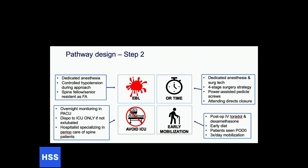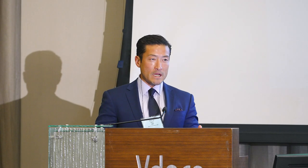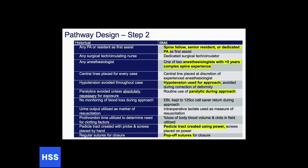We avoided ICU stays entirely for typical degen-scoli T10-to-pelvis patients — if they need monitoring, they stay in the PACU overnight. Hospitals specializing in peri-op care ensured all medical issues were addressed pre-operatively. For early mobilization, we used IV Toradol — based on a randomized control trial we published showing it did not affect fusion rates at two-year follow-up — and dexamethasone judiciously. Patients were started on early diet and mobilized on post-op day zero, out of bed the same day, three times daily.